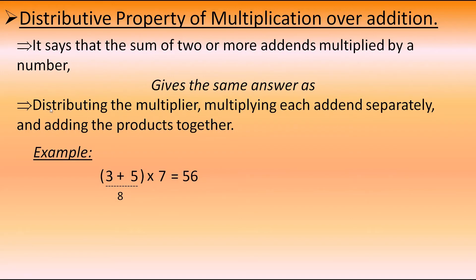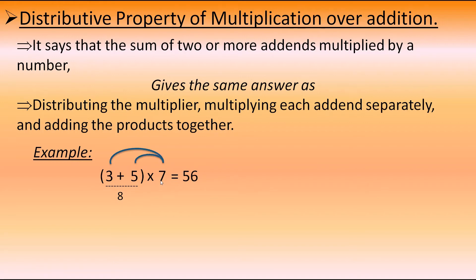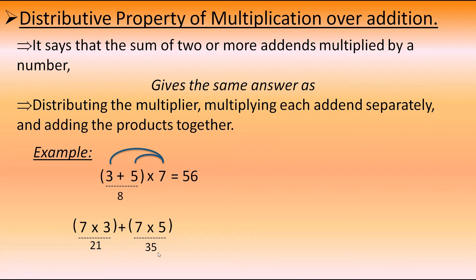According to the second statement, we distribute the multiplier — multiply 7 with each addend separately: 7 into 3 and 7 into 5, then add the products. So 7 threes are 21, and 7 fives are 35. Adding them: 21 plus 35 gives 56. We got the same answer. Let's check with another example: 2 and 4 multiplied by 6. First, 2 plus 4 equals 6, and 6 into 6 gives 36.